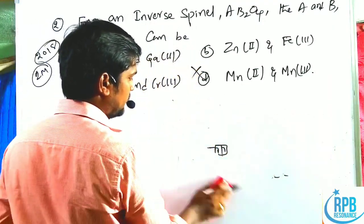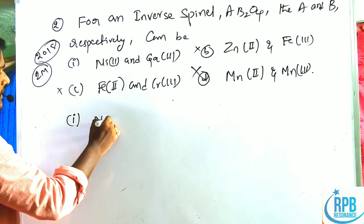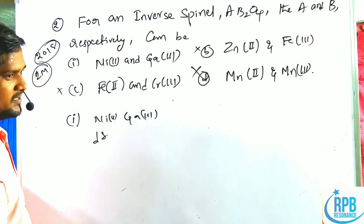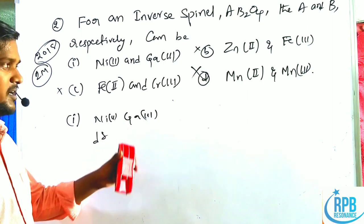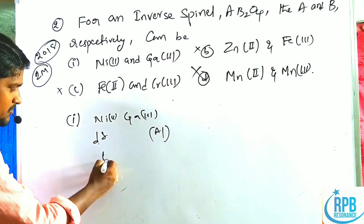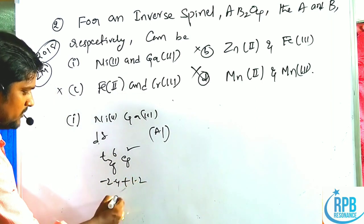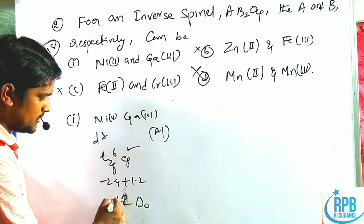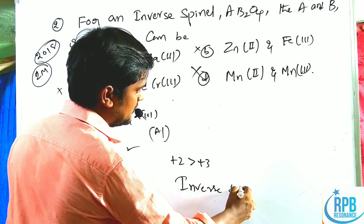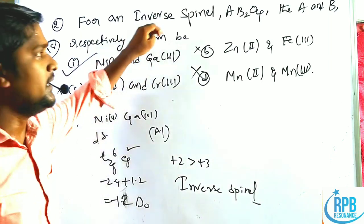By elimination, the answer is option A: Ni²⁺ and Ga³⁺. Ni²⁺ is d⁸ (t₂g⁶eg²), CFSE = −1.2 ΔO. Ga³⁺ is approximately d⁰ (like Al³⁺), CFSE = 0. Since A²⁺ CFSE (−1.2 ΔO) is greater than B³⁺ CFSE (0), this is an inverse spinel — option A is correct.